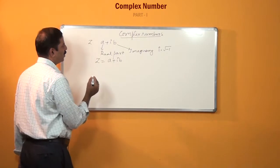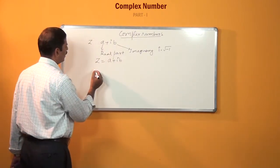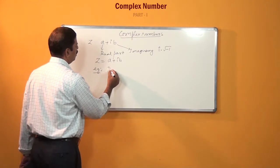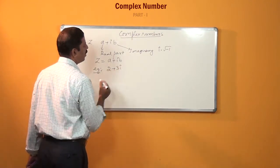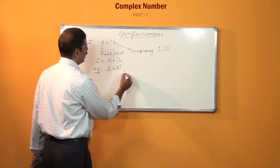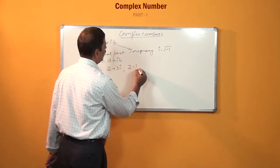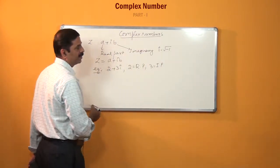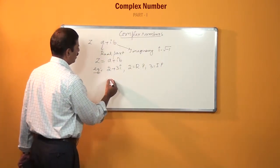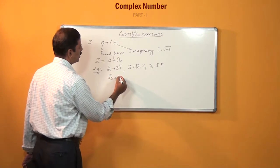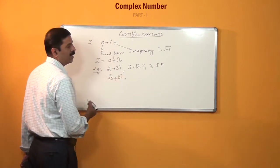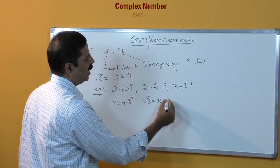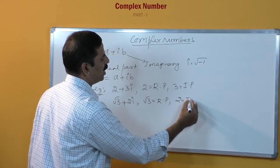For example, 2 plus 3i is a complex number where 2 is the real part and 3 is the imaginary part. Similarly, root 3 plus 2i, where root 3 is the real part and 2 is the imaginary part.